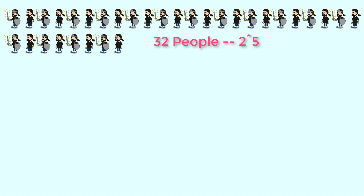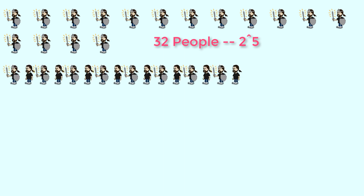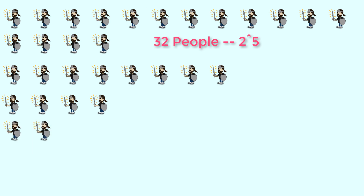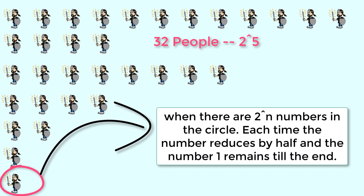For example, if there are 32 people: in the first round 16 people die and 16 remain; in the second round 8 people die and 8 remain; in the third round 4 people die and 4 remain; in the fourth round 2 people die and 2 remain; and finally in the last round one person dies and person number 1 is the remaining one.